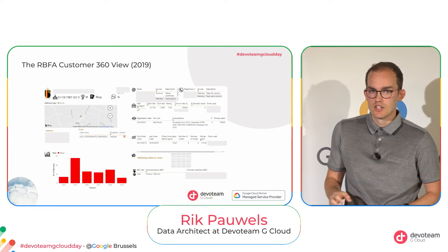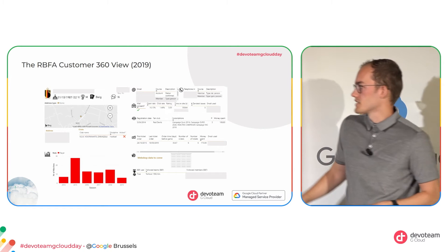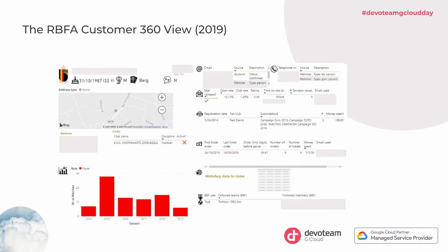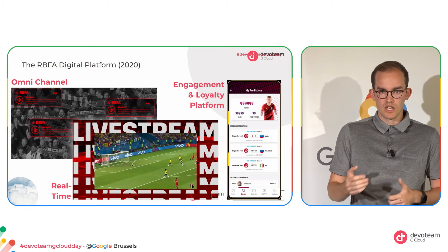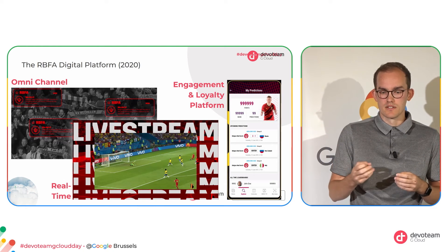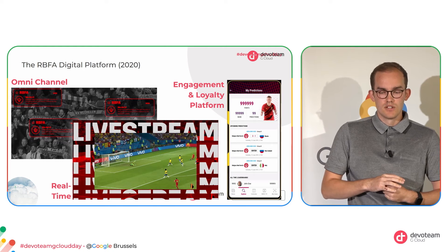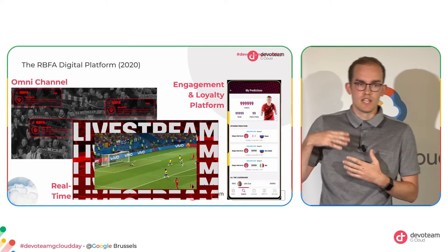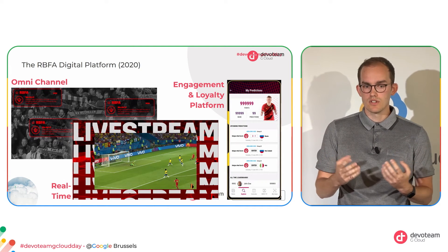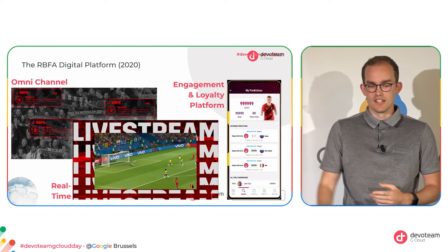The result was a customer 360 view — how many games a player played over the years, date of birth, gender, all information the customer gave consent to. You never want to track information without consent because legally it becomes complicated. From this unified view, they fed an omni-channel app and website with personalized content. They're also building a loyalty platform to keep users engaged — if they interact a lot with the app or Belgian football in general, they get rewarded with discounts, a soccer ball, or a t-shirt.